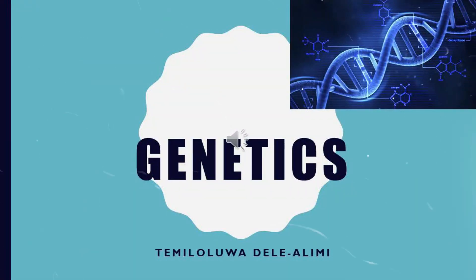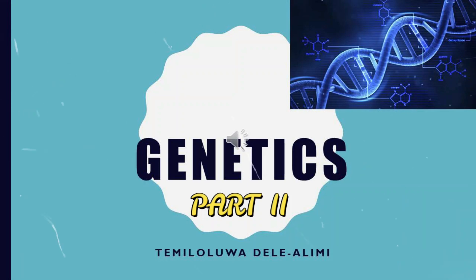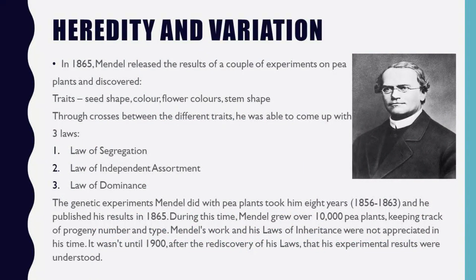Welcome back. We are continuing from where we stopped last time in the genetic series, and today we are going to be talking about heredity and variation. We're going to go to the past and visit a man called Gregor Mendel, who was an Austrian monk, scientist, and botanist. He decided to conduct a couple of experiments on the pea plant, and in 1865 he released the results.